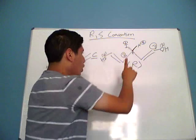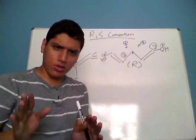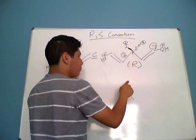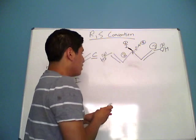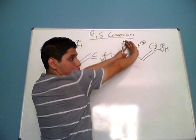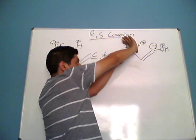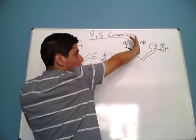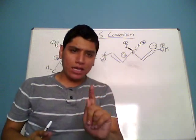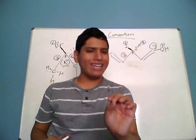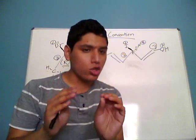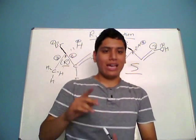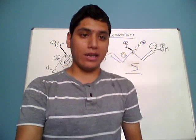Now let's make a brief change and alter the stereochemistry. What if hydrogen is pointing into the board and iodine is pointing out of the board? With your thumb into the board and fingers starting from iodine, you now go from 1 to 3 to 2 — not the correct order. Because you're not going in the right order, you do not have R. Instead, you have S. That's how R/S convention works, and in the next video I'll go over a more complicated example.